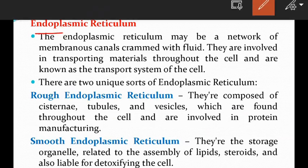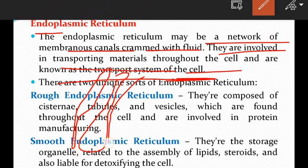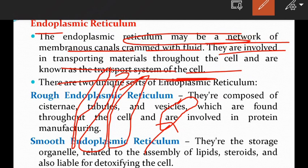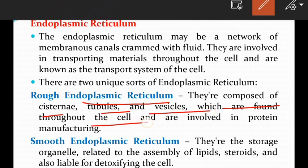The endoplasmic reticulum is a network of membranous canals filled with fluid. They are involved in transporting materials throughout the cell and are known as the transport system of the cell. The rough endoplasmic reticulum is composed of cisternae, tubules, and vesicles found throughout the cell and is involved in protein manufacturing.